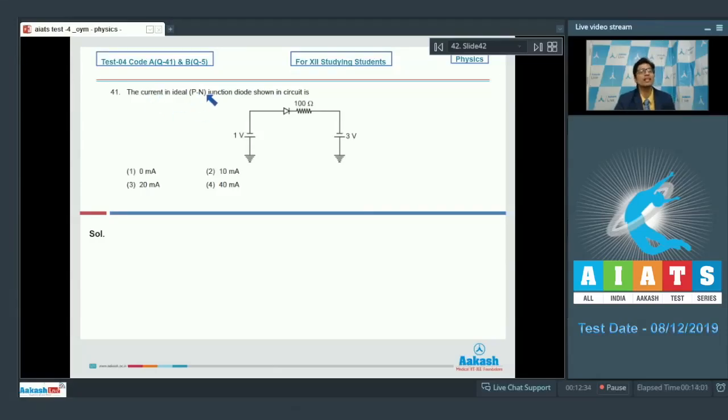Question number 41 says that the current in idle PN junction diode shown in circuit is. Now students, this particular diode is forward biased and hence the current through this diode will be equal to 3 minus 1 divided by resistance, that is 100, which equals 2 by 100 or 20 milliampere, which makes option number 3 as the correct answer.